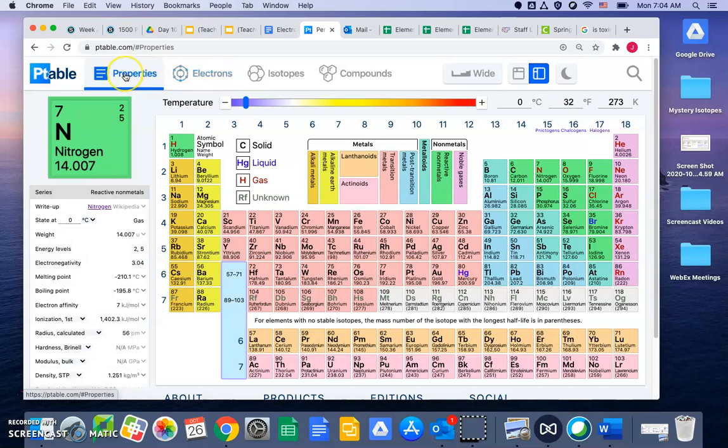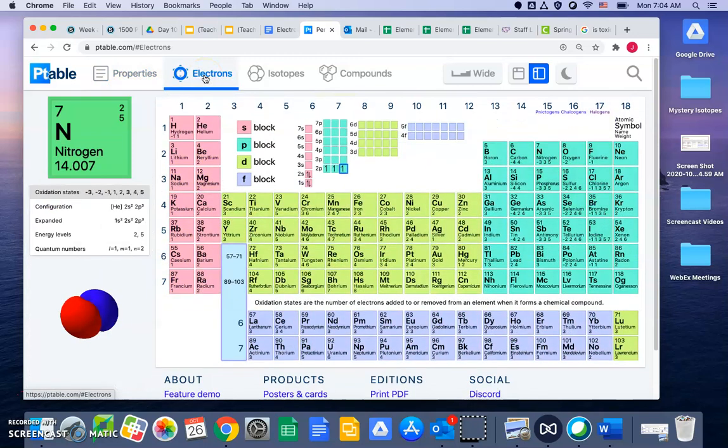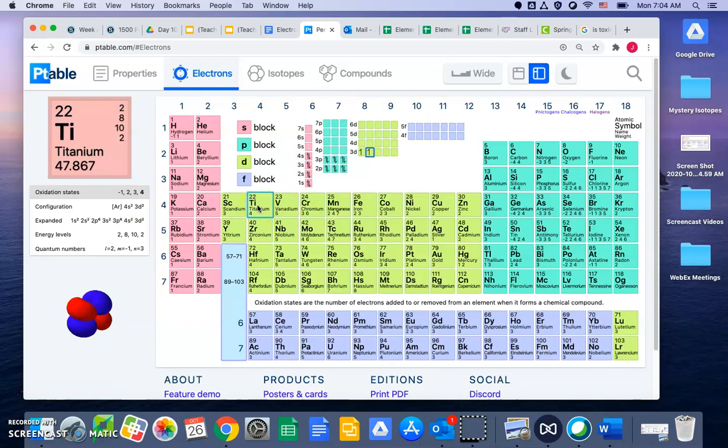You can click on electrons. And then if you click on an element, like for example we just did titanium, it will give you the orbital diagram on the side here. And so you can see that, look, the 1s, the 2s, the 3s, the 4s, the 2p and the 3p are completely filled. And then the d electrons have two in there.